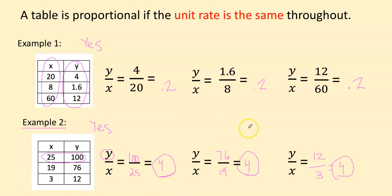So I hope this is helping you to remember how to recognize if a table is proportional or not. If it's proportional, the unit rate will be the same throughout. If it is not proportional, one of the unit rates will be different.